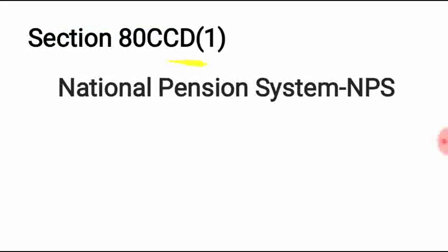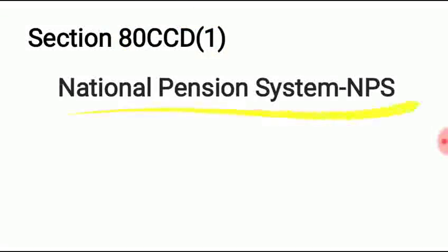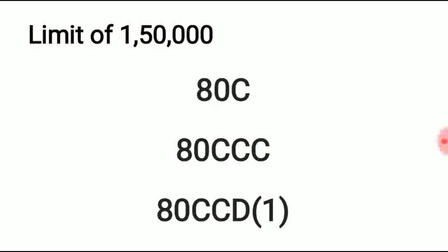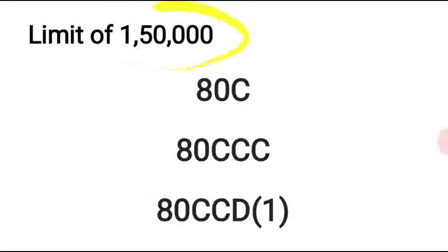Section 80CCD Subsection 1 is very important for NPS subscribers. It covers NPS contributions. You have to remember that the maximum combined limit for Sections 80C, 80CCC, and 80CCD Subsection 1 is Rs. 1,50,000.